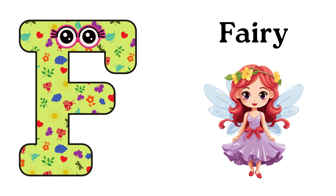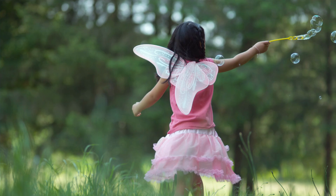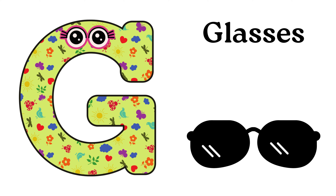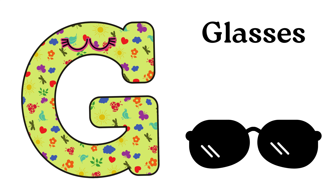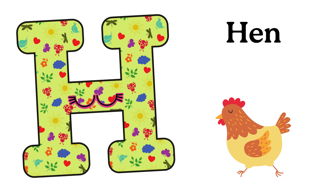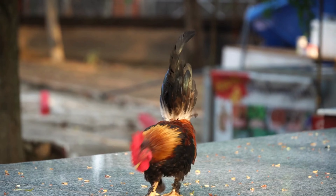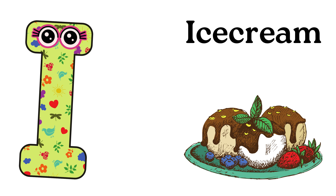F is for Fairy. F-F-Fairy, F-F-Fairy, F-Fairy. H is for Hen.